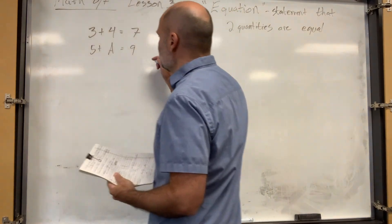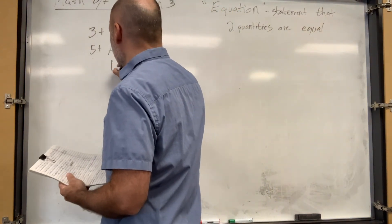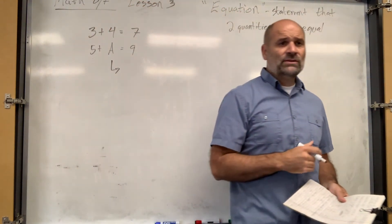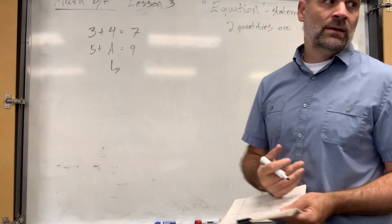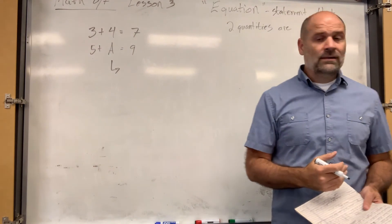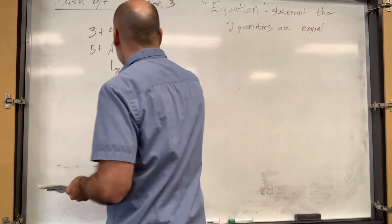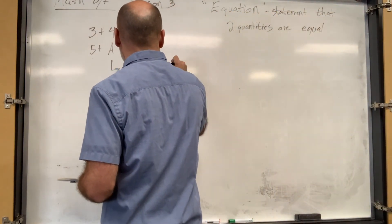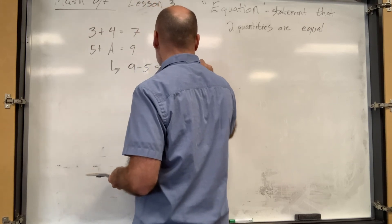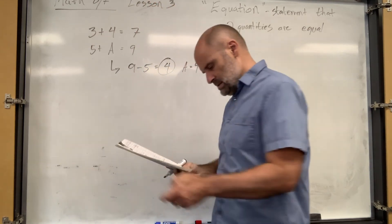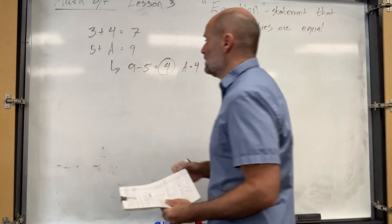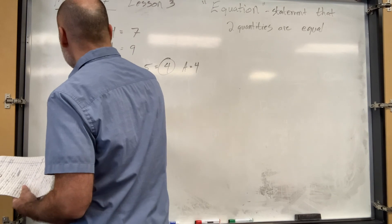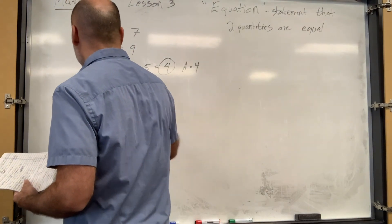So how would you figure out what that is? Well, maybe by trial and error, but what's a good way to figure out what a has to be? Nine minus five. Yeah — you just subtract. Nine minus five equals four, so a has to equal four. Basically what we're doing is we're using inverse operations to figure out the missing number.